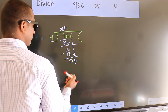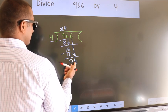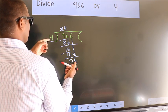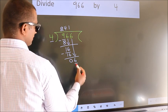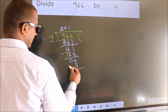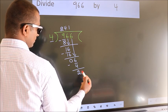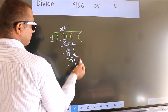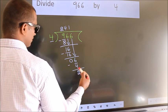So, 6. A number close to 6 in 4 table is 4 ones, 4. Now, we subtract. We get 2. No more numbers to bring it down. So, we stop here.